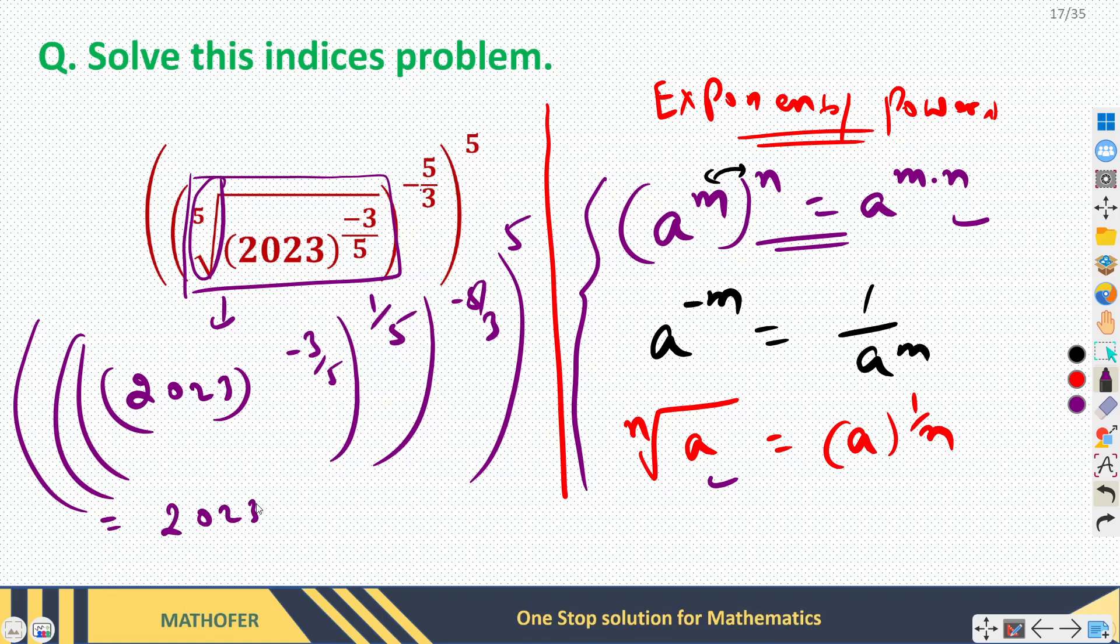So I can rewrite this as 2023 raised power minus 3 by 5 into 1 by 5 into minus 5 by 3 into 5. So there are four powers.